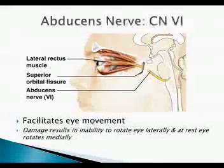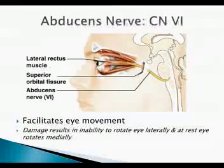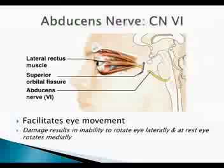CN6, the abducens nerve, passes through the superior orbital fissure and is again involved in eye movement.